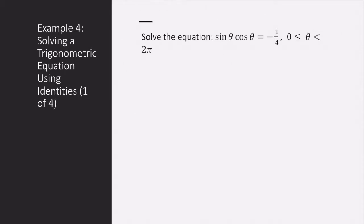So, example four is solving a trigonometric equation using identities. We're going to solve the equation sine theta cosine theta equals negative one-fourth, where theta is between zero and two pi.